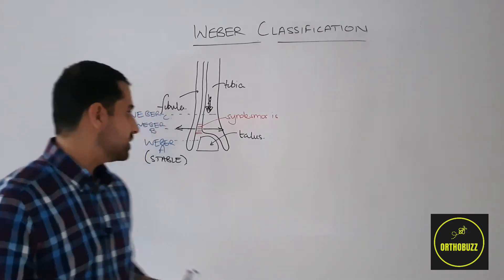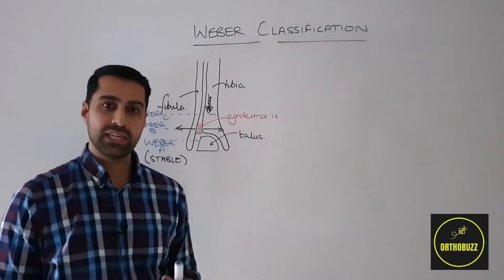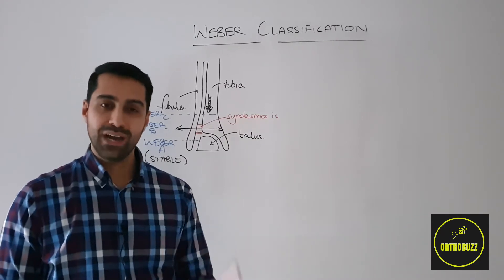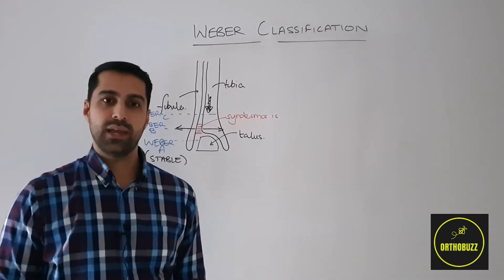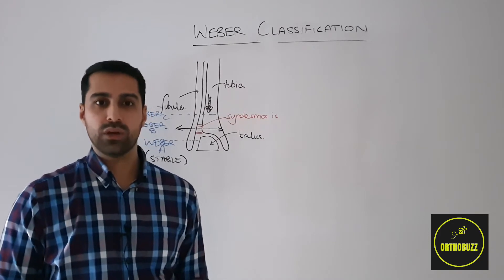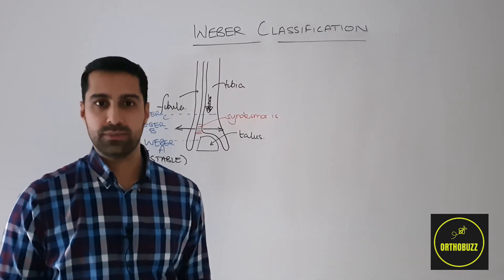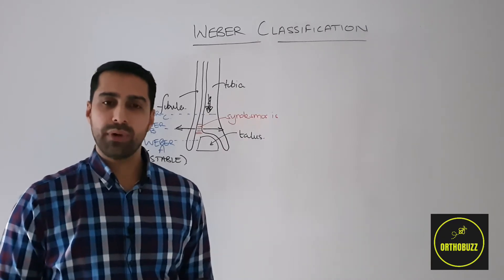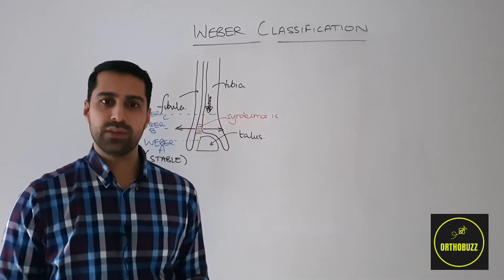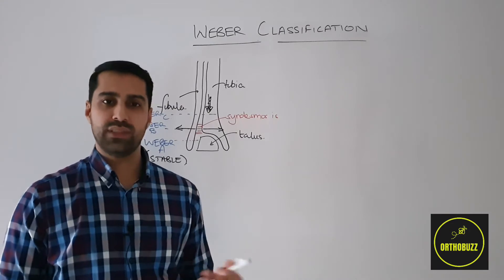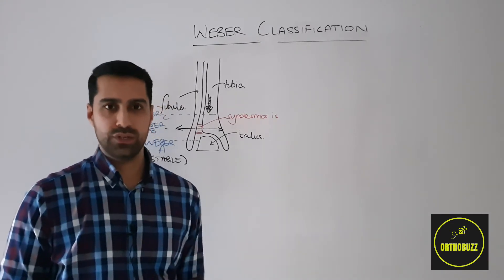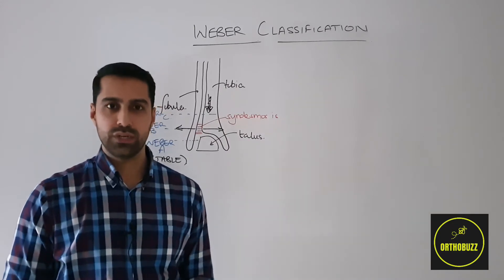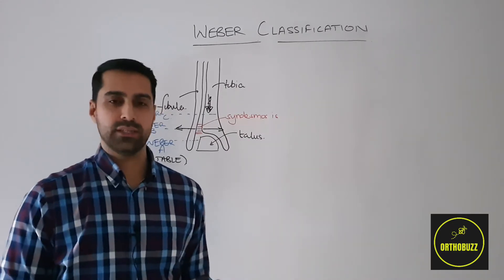If the syndesmosis is intact, we can manage these as we would for a Weber A ankle fracture, that's to say without an operation, non-operatively in a walking boot or comfortable padded shoes or trainers. If we do see any compromises in syndesmosis or are concerned about this, then we would proceed to treat these as Weber C ankle fractures, therefore with an open reduction internal fixation procedure to stabilize the syndesmosis.